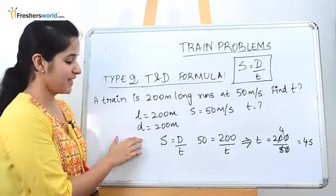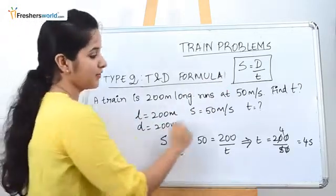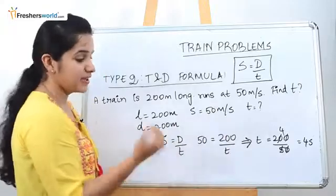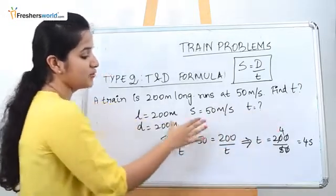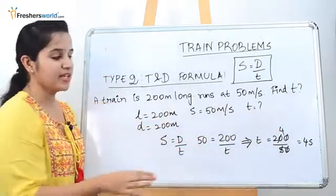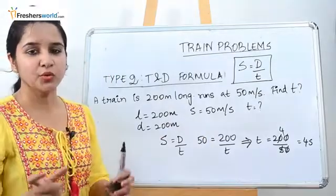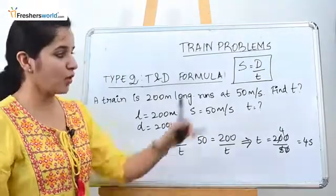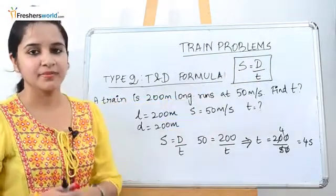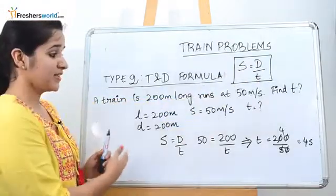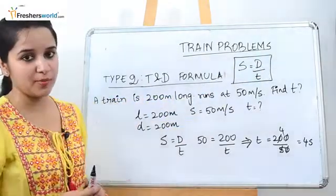In this question you can see they have given the distance and asked you to find the time. In certain questions they will give you the distance and the time and ask you to find the speed. What they will do is give you two variables out of this formula and ask you to find the third variable. With this simple example you would have understood how to use the formula.